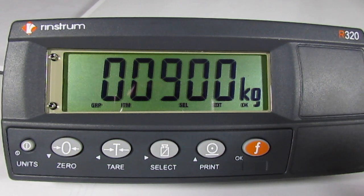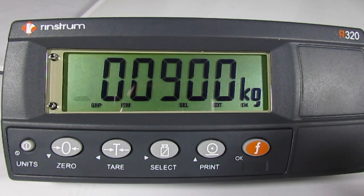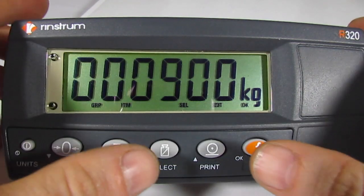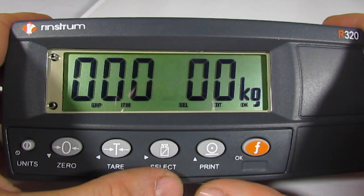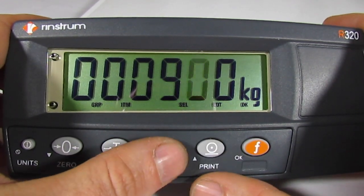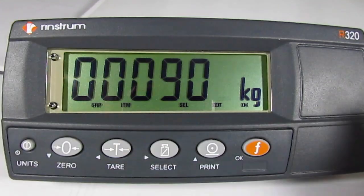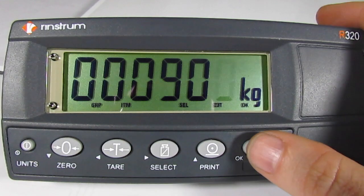And we want to enter our value, which currently is set for 900. To change that value, you would use the select key to move around, and the print key to increment your value. Since that value is acceptable, we will press the OK or F key to capture that value.